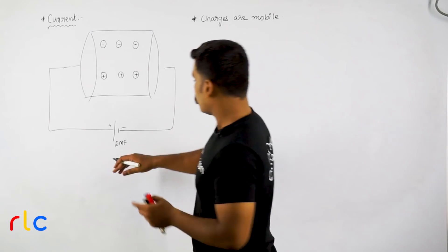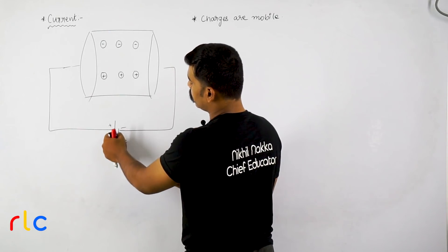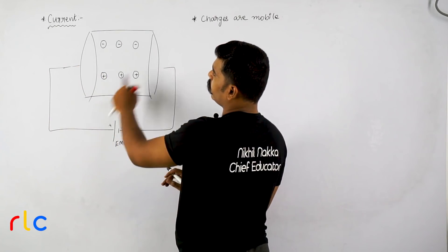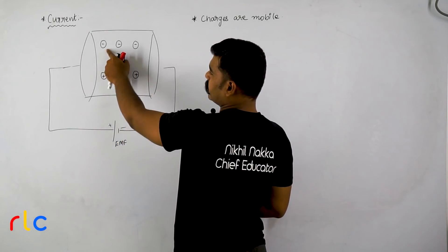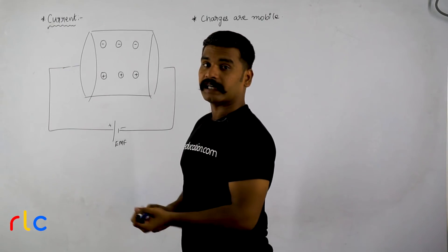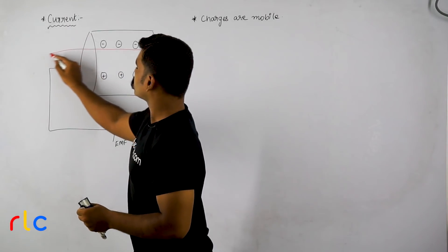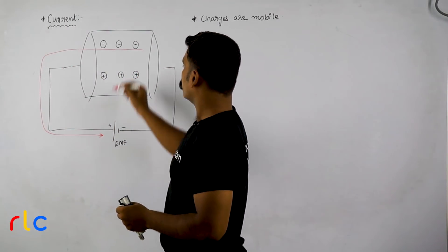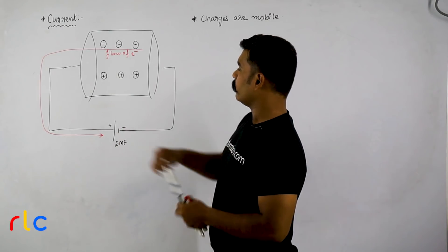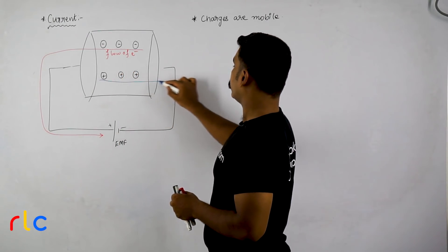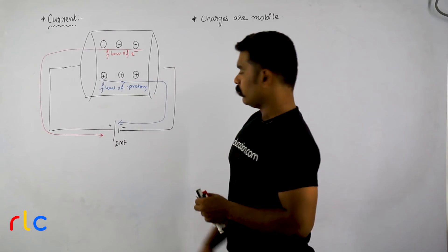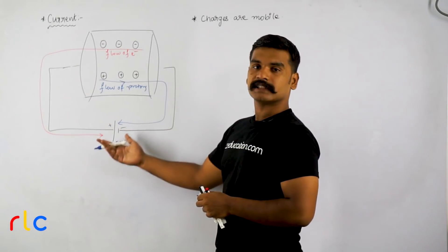From the properties of charge, like charges repel and unlike charges attract. The positive plate is applied on one side. Electrons, being negatively charged, get attracted towards the positively charged plate and start moving in that direction — that is the flow of electrons. Simultaneously, protons, being positively charged, get attracted towards the negative plate and start moving in the opposite direction — that is the flow of protons.